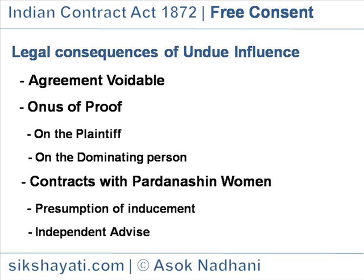Example: A poor farmer already owes money to B, a money lender. A takes a fresh loan from B on terms which appear to be unreasonable. A pleads that the contract was influenced. B then has to prove that the contract was not induced by undue influence.